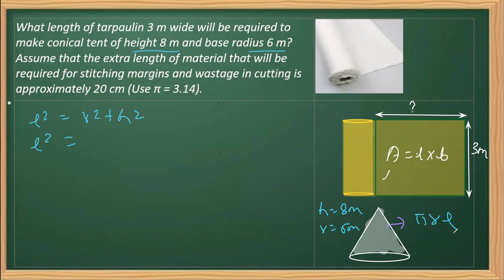Applying this relation, L squared equals R squared plus H squared, we can get the slant height. Why are we finding the slant height? Because we need curved surface area. So L squared equals 6 squared plus 8 squared, which is 36 plus 64, that is 100. That implies L equals 10 meters.